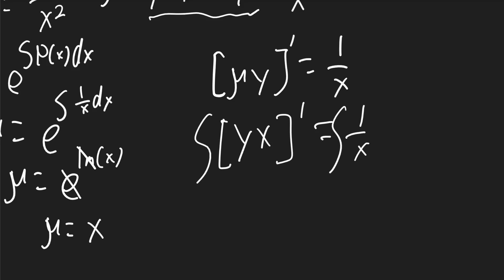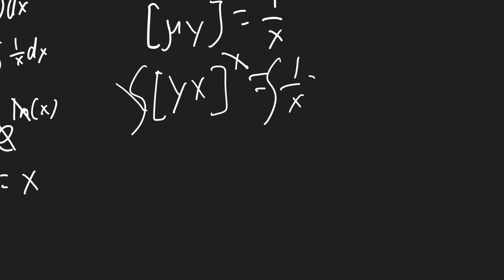Now we can integrate both sides. On the left, the integral will cancel the derivative. On the right, 1 over x dx is just ln x.